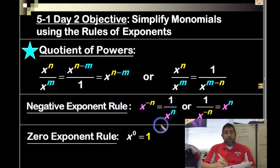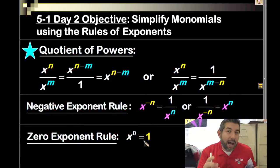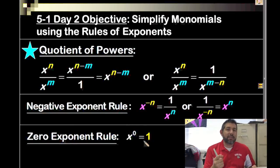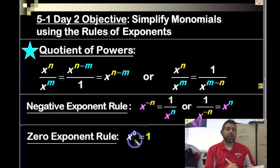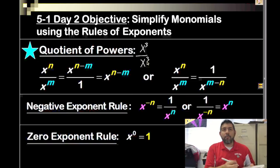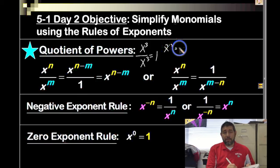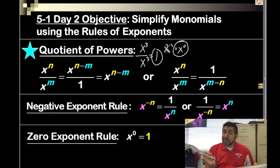In the other video, I mentioned that x to the zero power equals one, and I said I'd explain exactly why. It really has to do with the quotient of powers rule. Let's pick x to the third divided by x to the third. Anything divided by itself is one. But using the subtraction rule, we get x to the (3 minus 3) = x to the zero. So x to the zero equals one — that's why it's true.